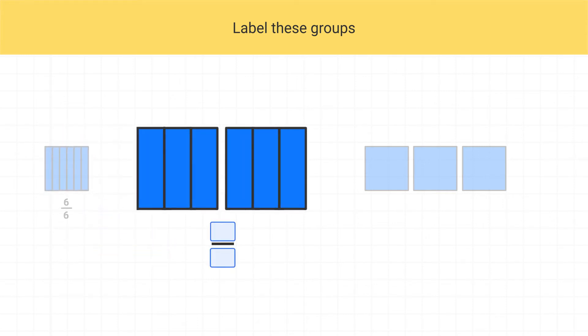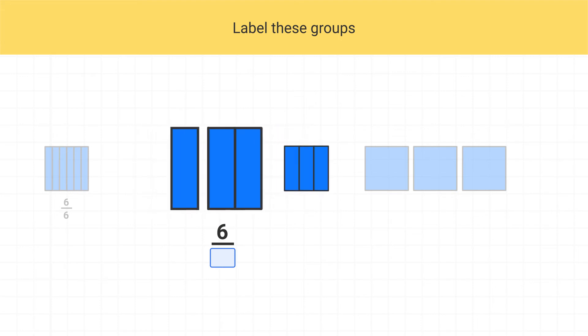Now, let's label this next group. What fraction can I use for this group? We can count that again we have 1, 2, 3, 4, 5, 6 pieces, so our numerator is 6. But now, each of these pieces is 1 third of a square. So here, we have the fraction 6 thirds.